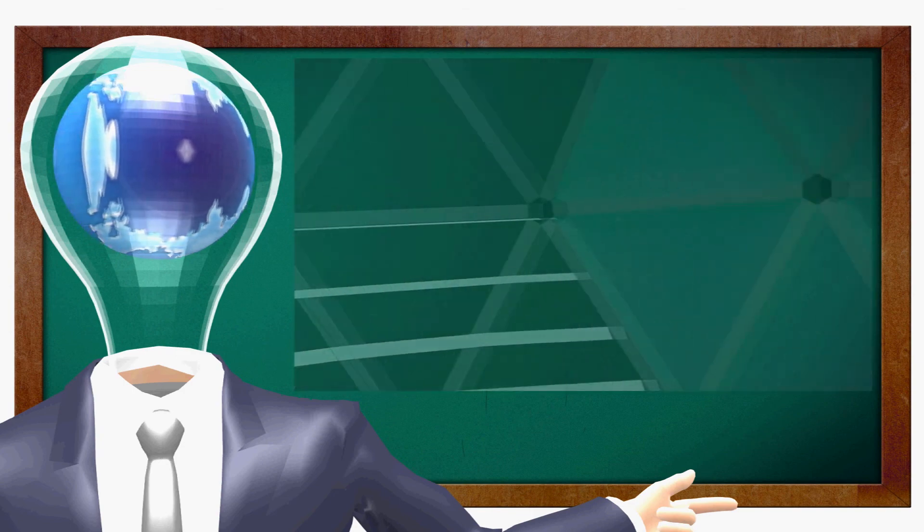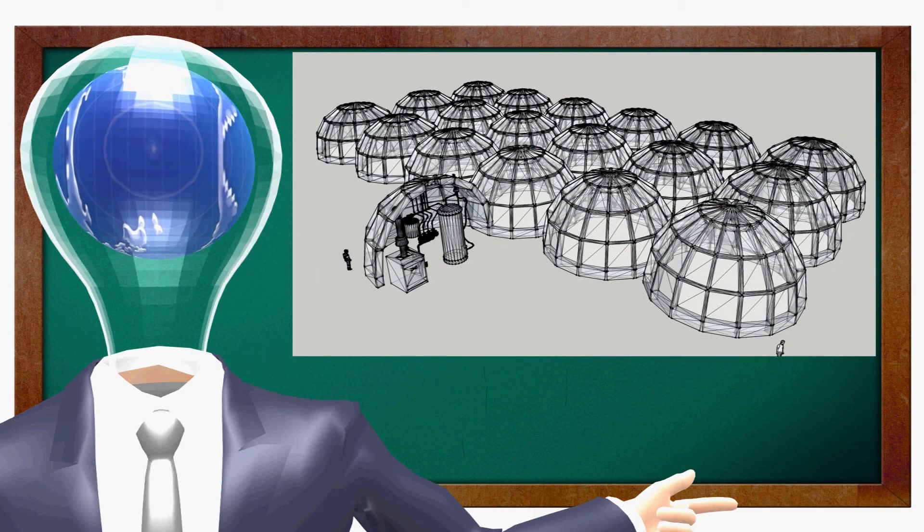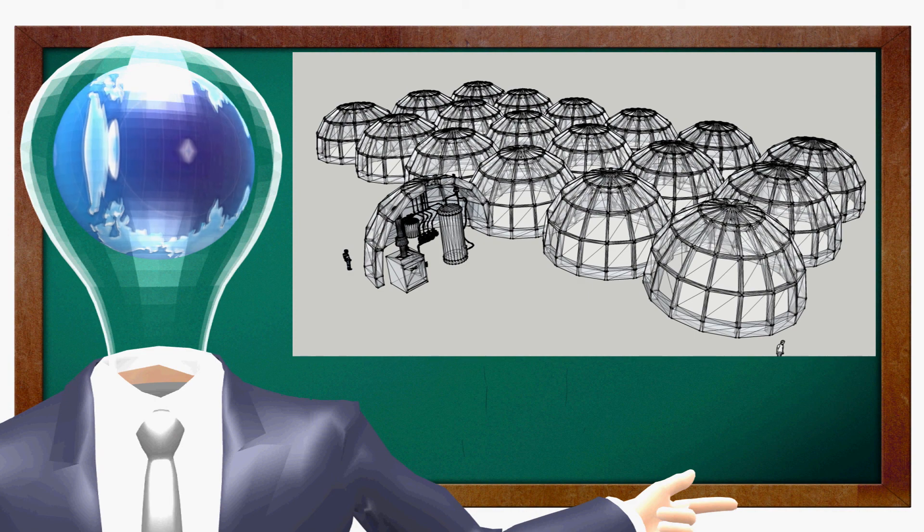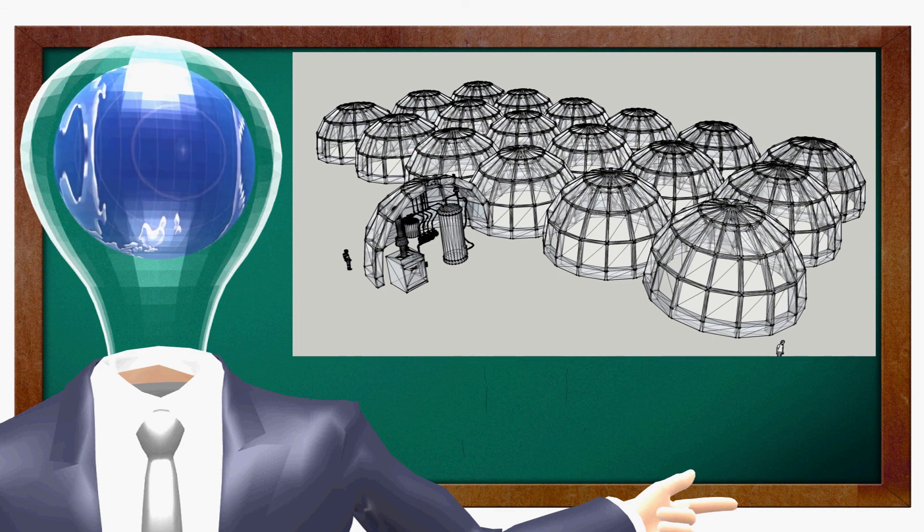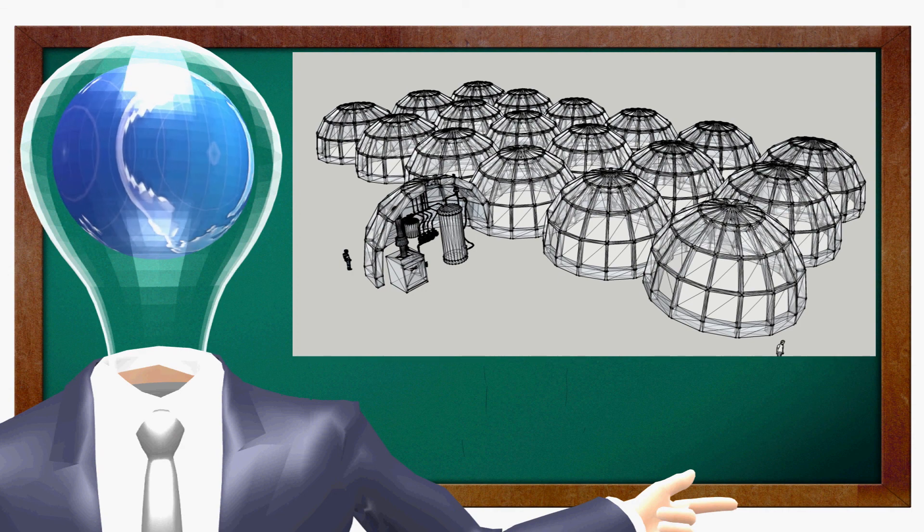Each of these biosphere sections will consist of 6 60-foot domes, connected in two rows of three. Each of these six-pack sections will be set in groups of 2 to total 12 60-foot domes in a pod, and there will be a total of 12 pods in the Biosphere 2011 project. All project pods will be controlled and monitored from the command central.